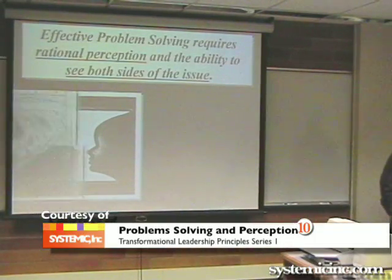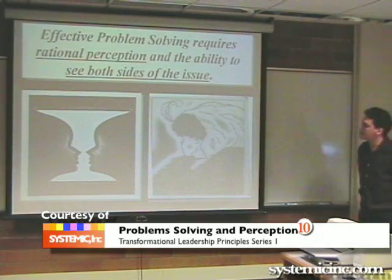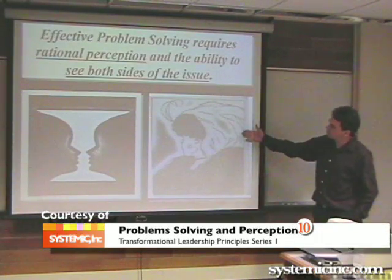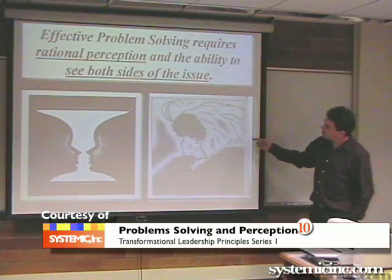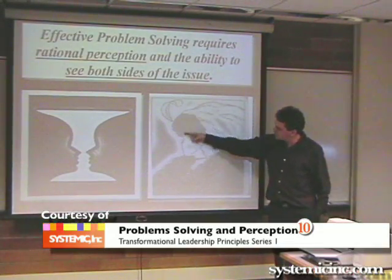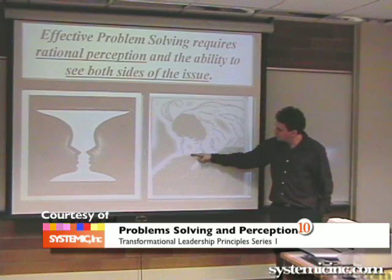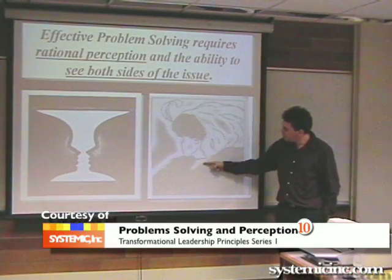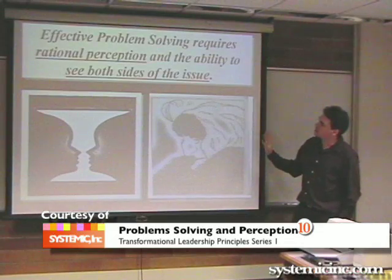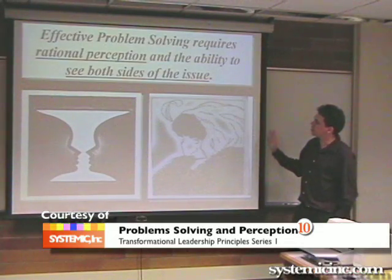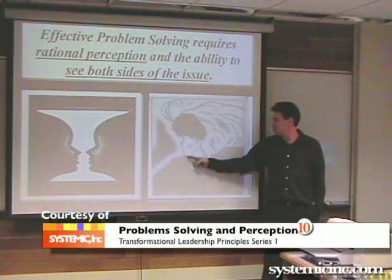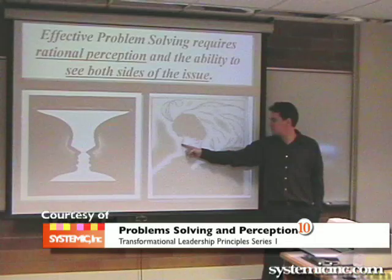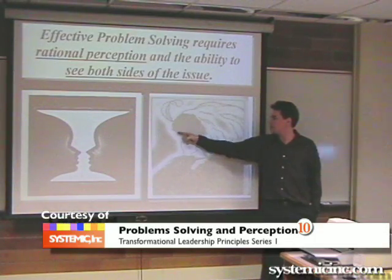On that same idea, here we have what's called the old woman versus the young woman. When you first look at it, there's an old woman — you can see her nose, her mouth, and her chin. Now, if you look at both sides of what this picture could be, it could be a young woman looking over her shoulder. There is her chin, that's kind of her nose, and her eye, and this is her head.